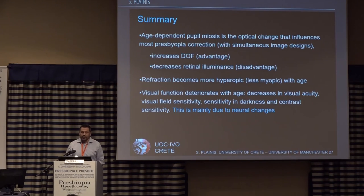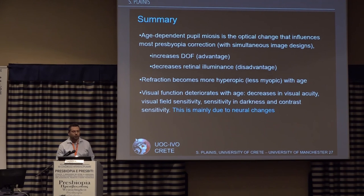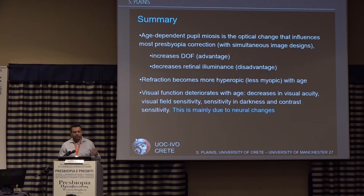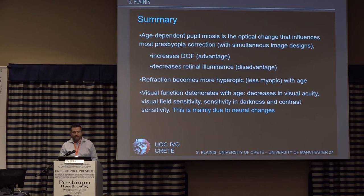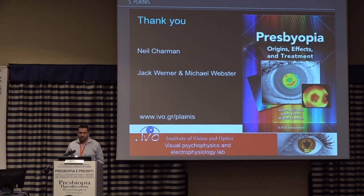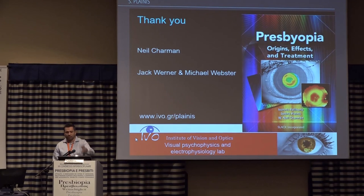To summarize: age-dependent pupil miosis seems to be the optical change that most influences presbyopia correction for multifocal designs, because it increases depth of focus — an advantage — but decreases retinal illuminance — a disadvantage. We should not forget that refractive error on the average eye becomes less myopic or more hyperopic with age. Visual function deteriorates with age: there are decreases in visual acuity, visual field sensitivity, sensitivity in darkness, and contrast sensitivity, but these may be mainly due to neural rather than optical changes. Thank you for your attention, and thanks also to this book, from which I used data from two chapters.